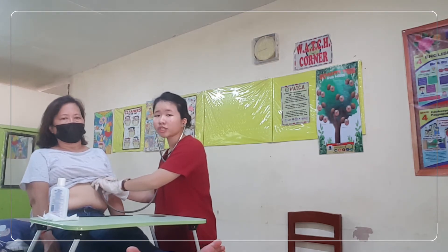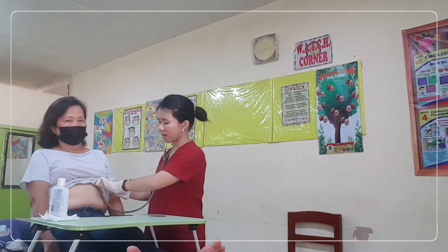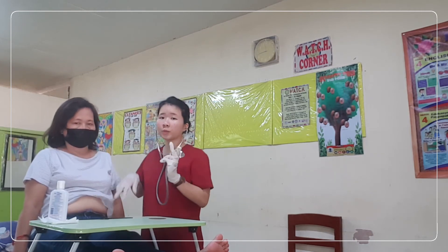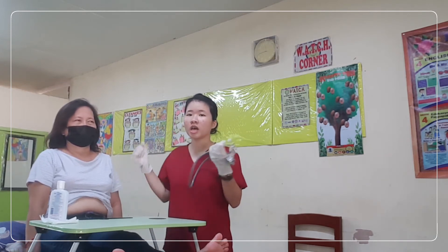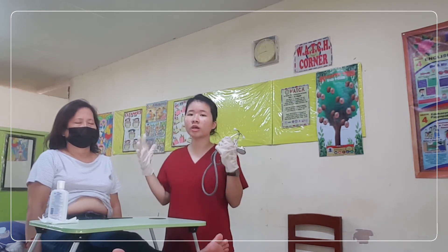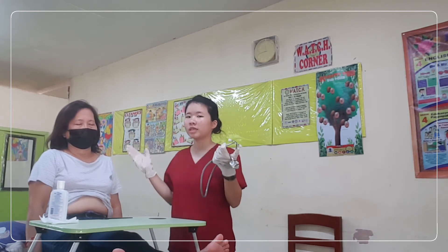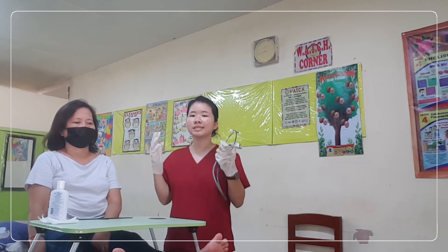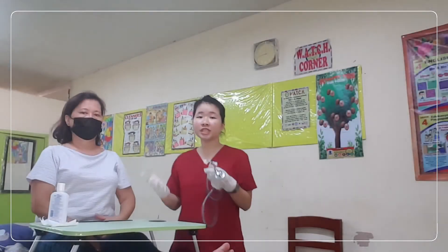Procedure number twelve: using a watch with a second hand, count the heartbeats for one minute. After one minute, we got 63 beats per minute. If your patient has an irregular pulse, it is more accurate to count for a longer interval than one minute. Since my patient is regular, we only did one minute. Her pulse is normal since the normal range is 60 to 100 beats per minute, and hers is 63.